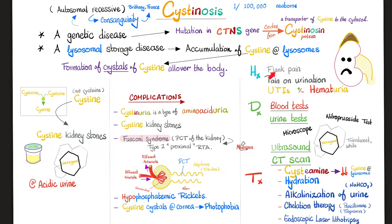History and physical exam: signs and symptoms of rickets, signs and symptoms of vision problems — you can see deposits in the cornea on ophthalmological examination. The patient complains of stone symptoms: flank pain that radiates to the groin and sometimes to the perineum, pain on urination, recurrent urinary tract infections, and sometimes even hematuria.